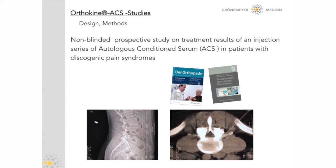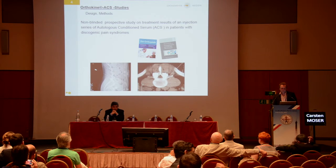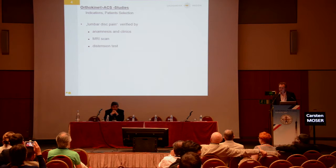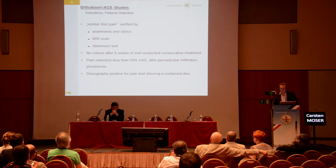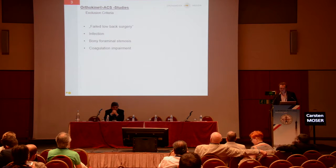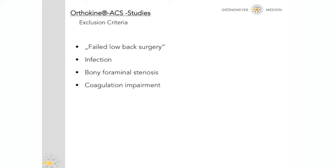The discogenic pain trial is a non-blinded prospective case series — a controlled study in patients with lumbar disc pain. Diagnosis was verified by correct anamnesis, clinical examination, MRI scan, and a positive distension test. Inclusion criteria included no relief after eight weeks of conservative therapy, less than 50% pain reduction on a VAS after peri-radicular or epidural injection, and a positive discography indicating positive memory pain. Patients had no failed low back surgery and no infection or bony problems.